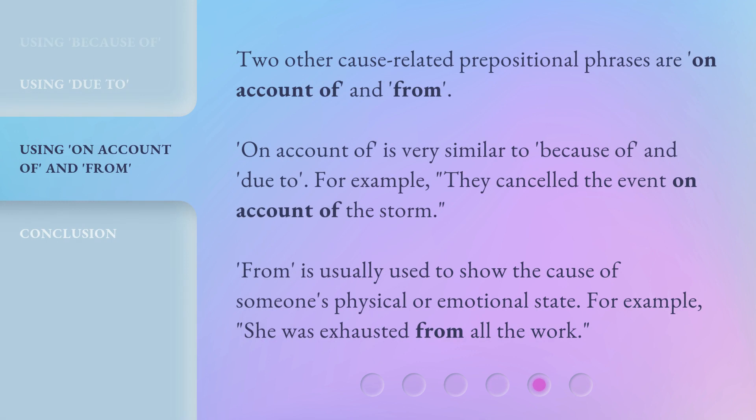Two other cause-related prepositional phrases are 'on account of' and 'from.' 'On account of' is very similar to 'because of' and 'due to.' For example: 'They canceled the event on account of the storm.' 'From' is usually used to show the cause of someone's physical or emotional state. For example: 'She was exhausted from all the work.'